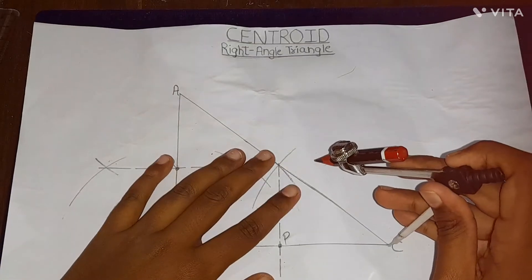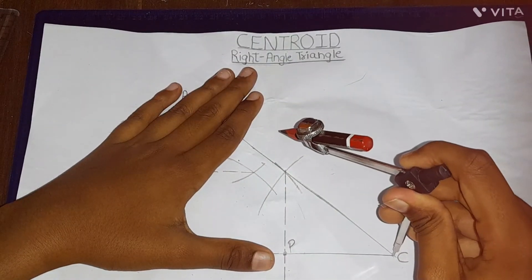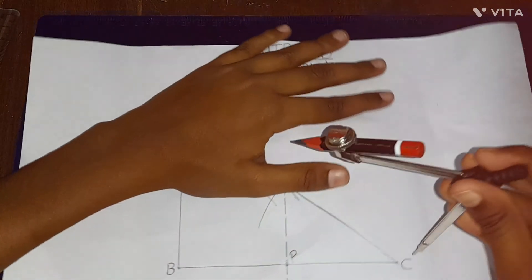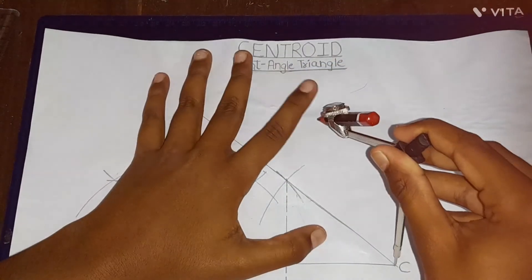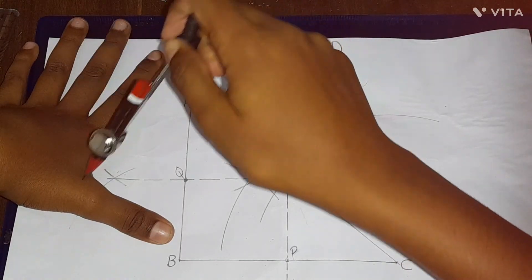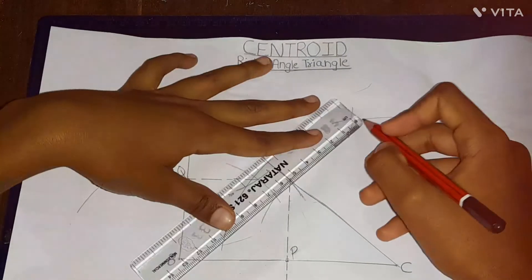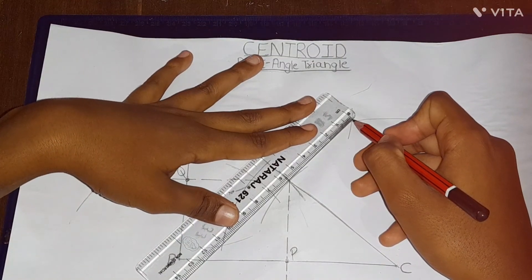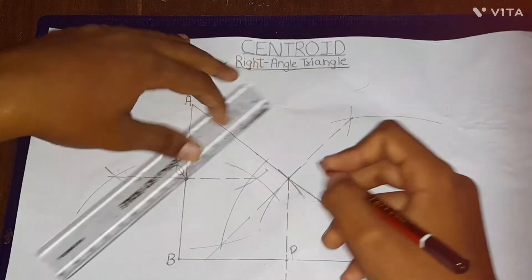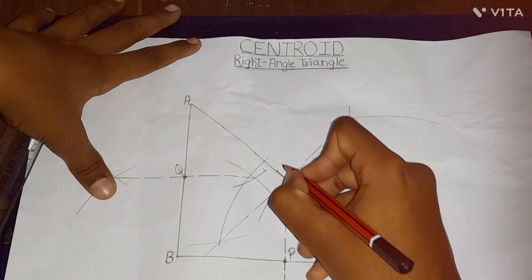Same for AC. Let's keep the compass needle on C, then make it more than half — this span is more than half. Then we will draw two arcs. With the same span, keep the compass needle on A and cut these two arcs. And now join them. So after joining, we will get the midpoint of AC. And it is the midpoint of AC. We will name it as R.